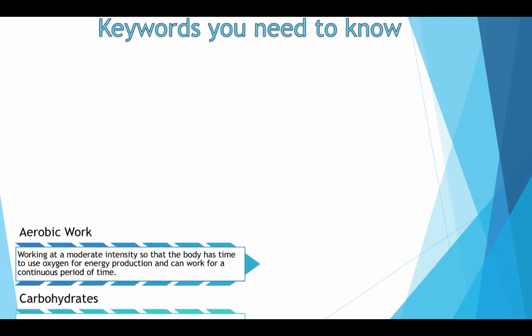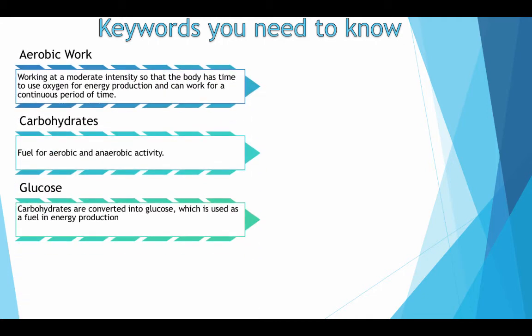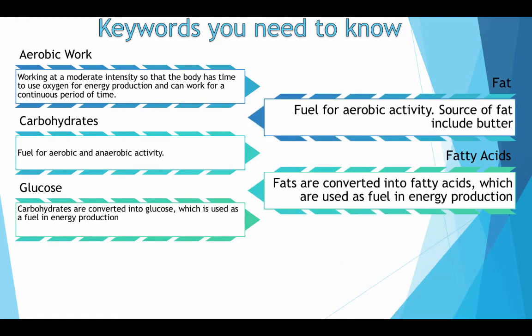Key words you need to know. Aerobic work: working at a moderate intensity so that your body has time to use oxygen for energy production, and can work for a continuous period of time. Carbohydrates: fuel for aerobic and anaerobic activity. Glucose: carbohydrates are converted into glucose, which is used as a fuel in energy production. Fat: fuel for aerobic activity — sources of fat include butter. Fatty acids: fats are converted into fatty acids, which are used as a fuel in energy production.